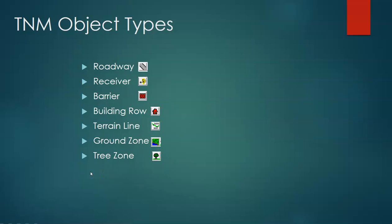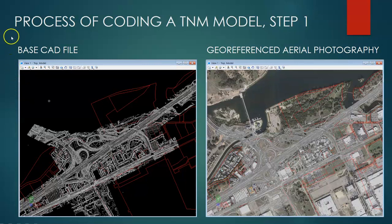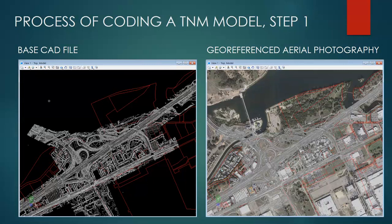Let's look at an example project setting and give a high-level overview of how to assemble a model. Here is our example project — an interchange project in Northern California. This is a type 1 project that increases capacity of the interchange, but in this tutorial we'll focus on developing an existing conditions model, because apart from future project roads the existing case is the model case where we assign all of our TNM object types.